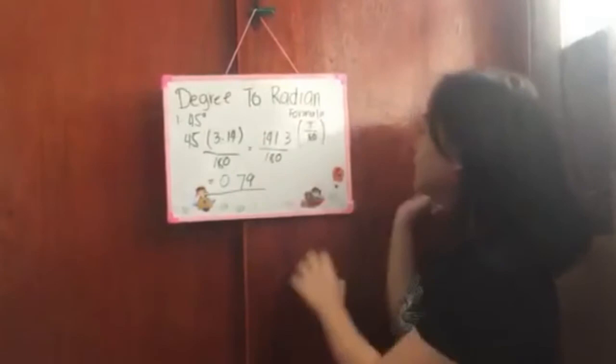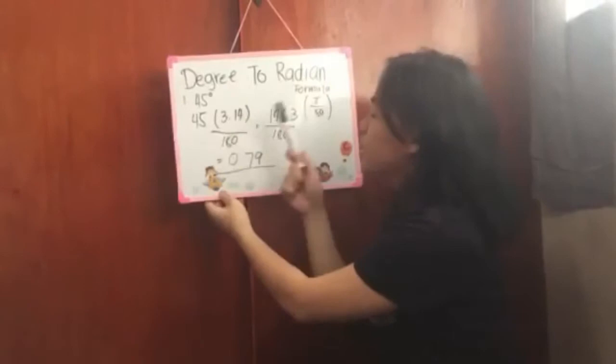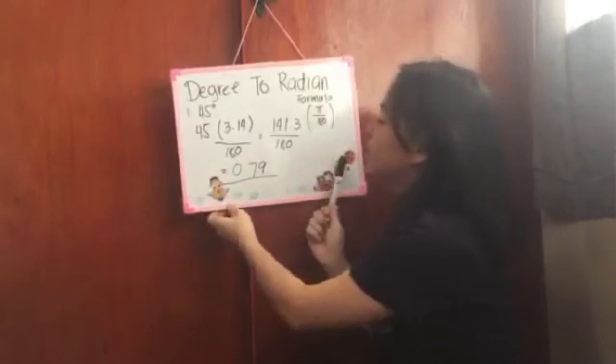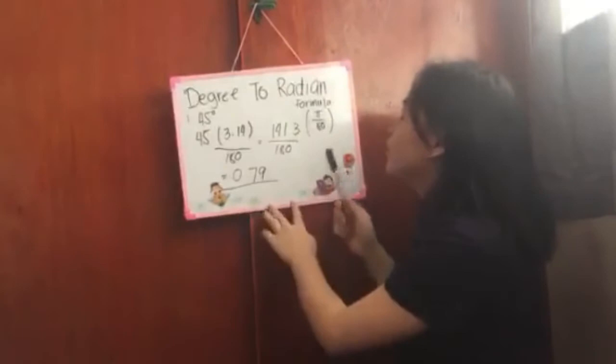Example number 1 is 45 degrees. 45 times pi which is 3.14, the result is 141.3. And divide by 180. Because there's an imaginary 1 here, when you multiply by 180, the result is the same. Then 141.3 divided by 180 equals 0.79. There's no degree because you converted it to radian.